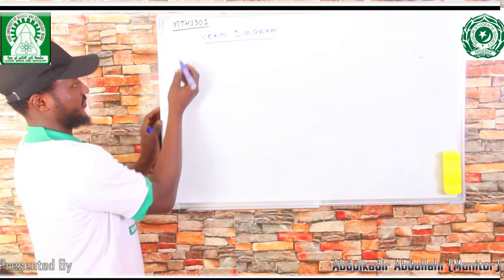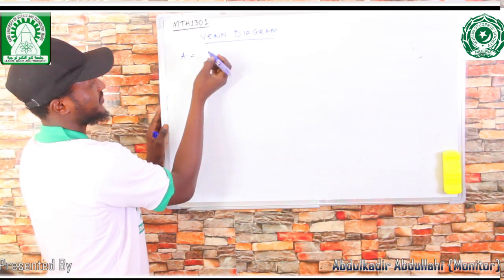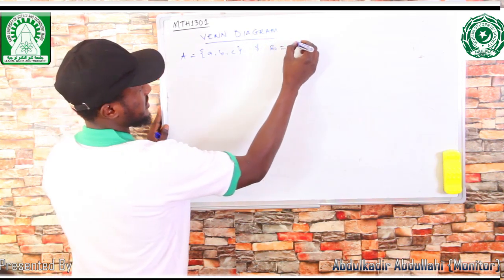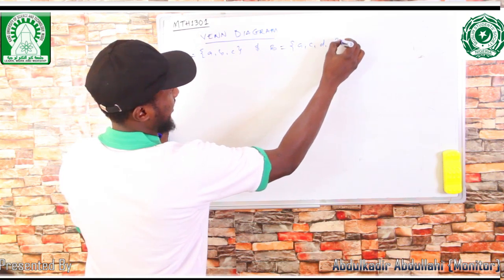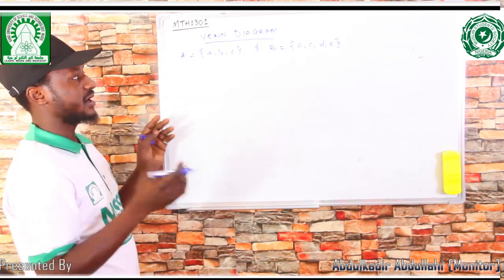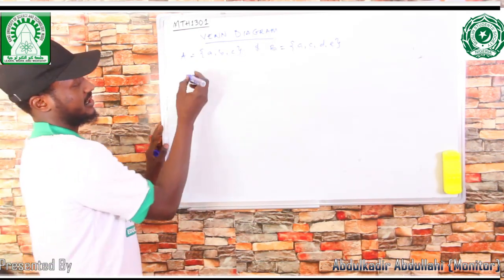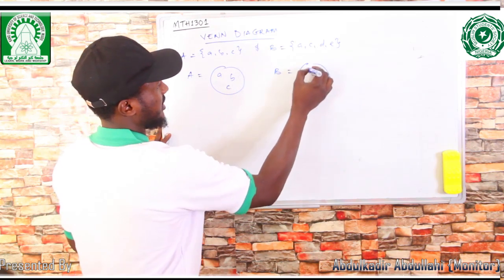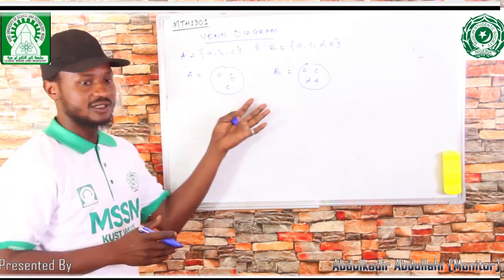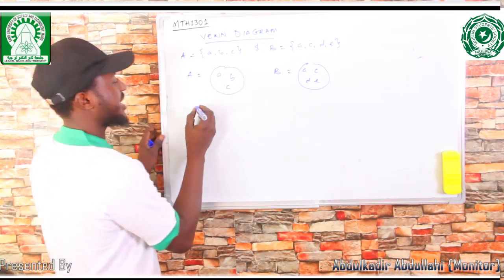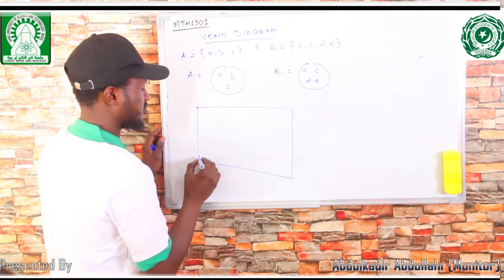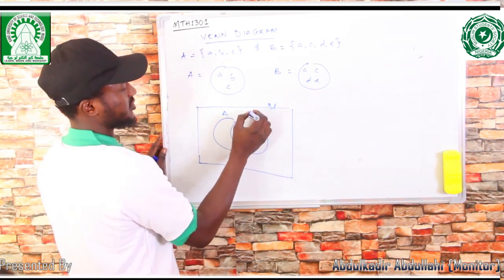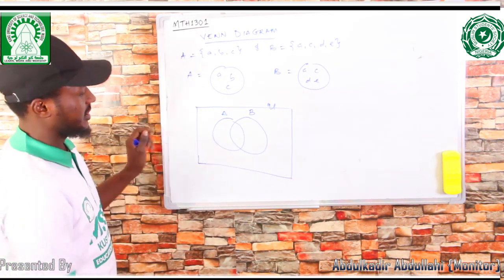For instance, I may have set A = {A, B, C} and set B = {A, C, D, O}. In a Venn diagram, we normally represent each set in a circle. We then join the two circles inside a rectangle, and this rectangle is what we call the universal set. We take our first set A and join it together with the second set B — this is a Venn diagram.